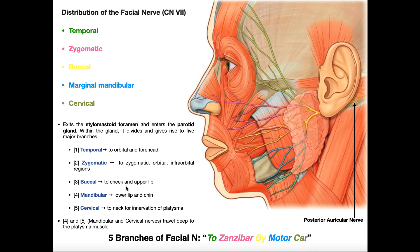The lower lip is supplied by the marginal mandibular branches — 'motor M' — shown in blue, right below the buccal branches. The marginal mandibular branch supplies the lower lip and the chin. Then the lowest branch, in green at the bottom, is the cervical branch — the 'car' in the mnemonic — which supplies the neck, specifically innervating the platysma muscle. Note that the marginal mandibular and cervical branches actually travel deep to the platysma, so the platysma overlies both of them.